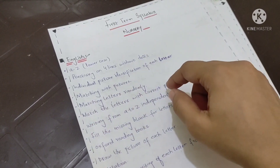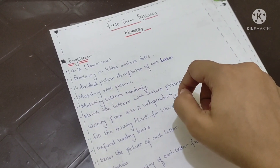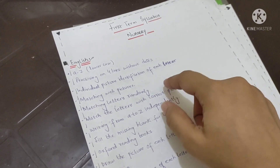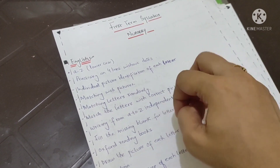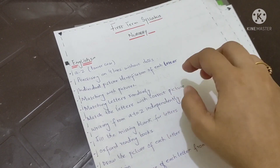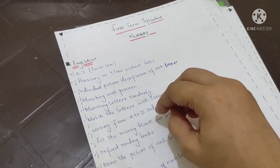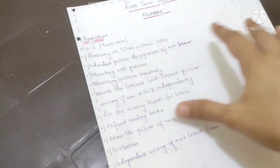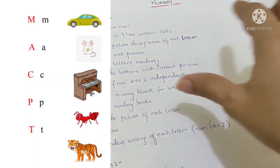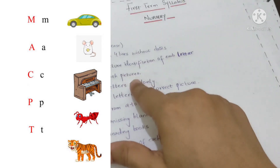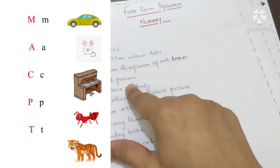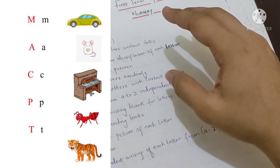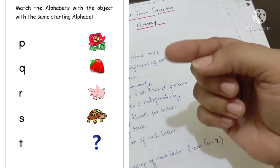The first thing I am going to discuss is English. The first topic is A to Z lowercase letters. In pre-nursery syllabus we were helping the child with recognition and formation of letters.